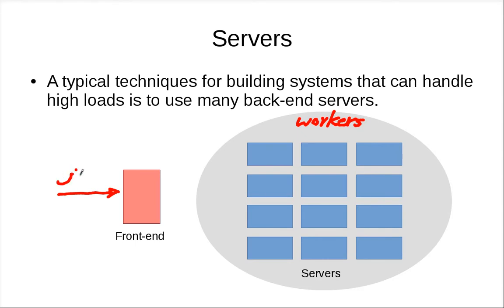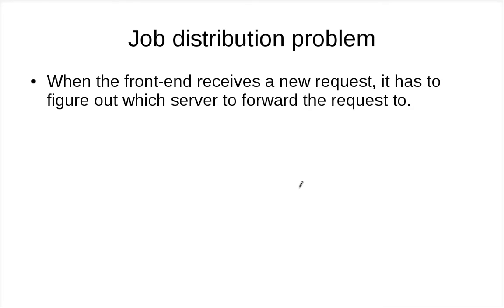You have a lot of workers and jobs coming in here to the front end. The front end somehow distributes these jobs into the workers so they can work on the jobs and output the results. When the front end receives a new request, it has to figure out which server to forward the request to.